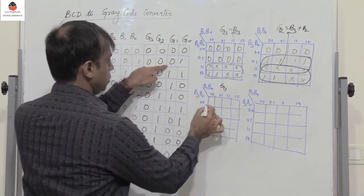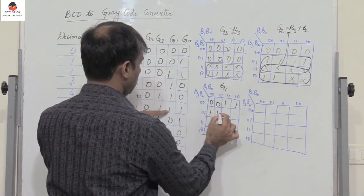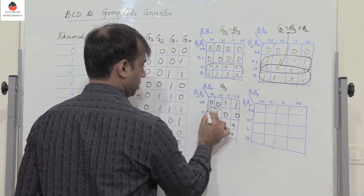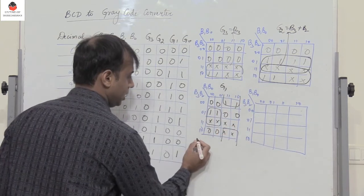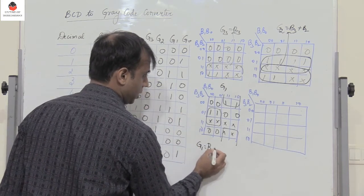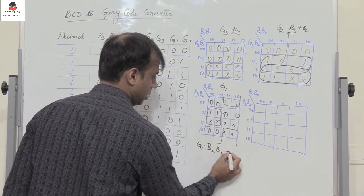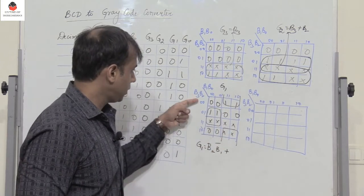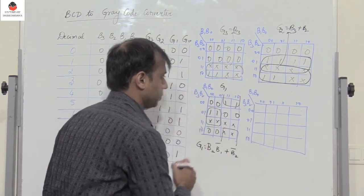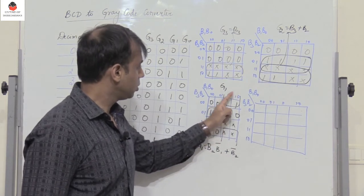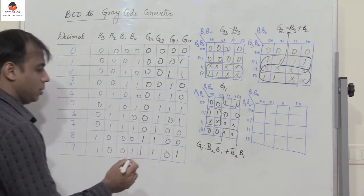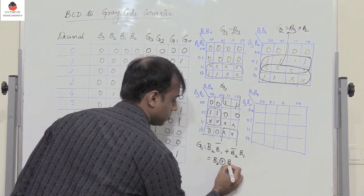For G1, the K-map values are 0 0 1 1, then 1 1 0 0, with the remaining as don't cares. Combining these four and those four: in the first grouping B3 is in complementary form so we get B2, and B0 is in complementary form so we get B1 bar — giving B2·B1 bar. For the other group, B2 bar appears and B0 is complementary giving B1 — giving B2 bar·B1. So G1 = B2·B1 bar + B2 bar·B1, which is nothing but B2 XOR B1.